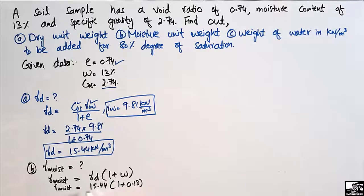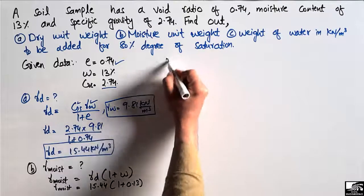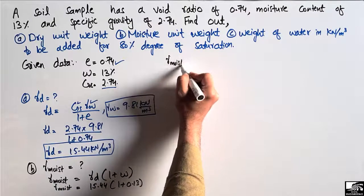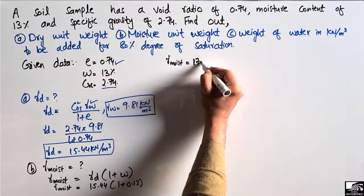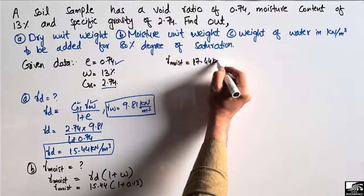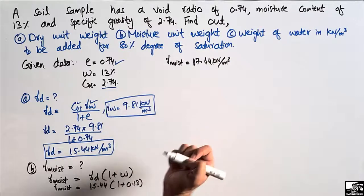Since γmoist depends on γD, we first needed the dry unit weight before computing the moisture unit weight. By multiplying 15.44 × (1 + 0.13), γmoist comes out to be 17.44 kN per cubic meter. This is the moisture unit weight for this soil sample.